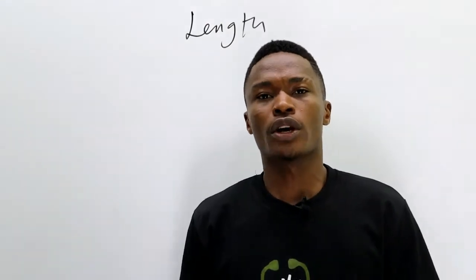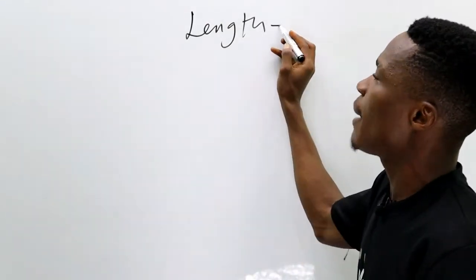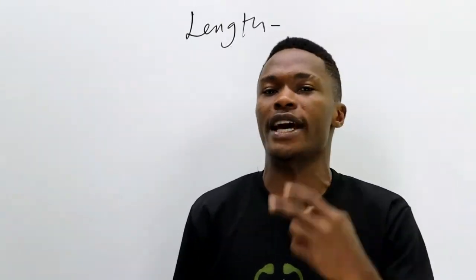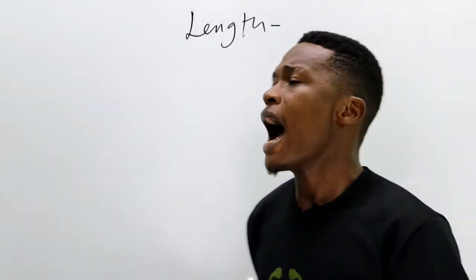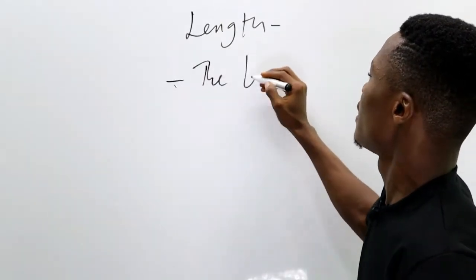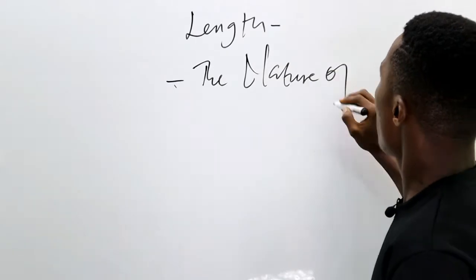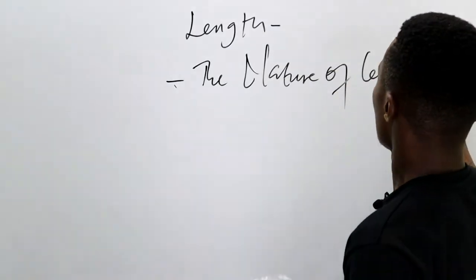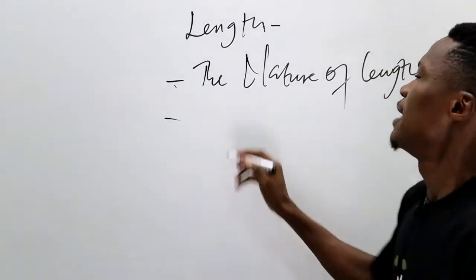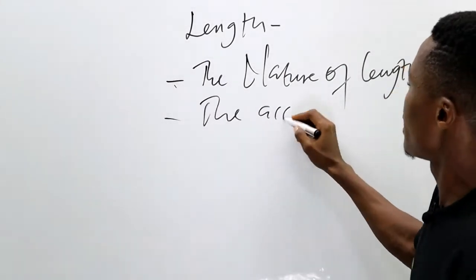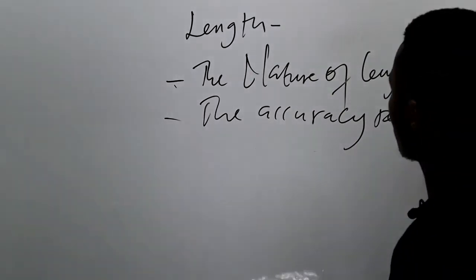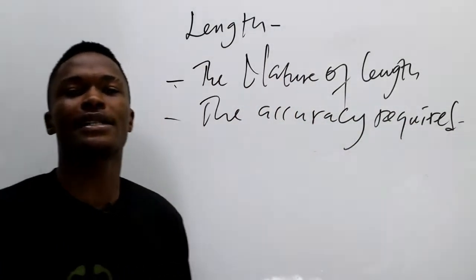Anytime we talk about length, the instrument to use for measuring it depends on two things: number one is the nature of the length to be measured, and the second one is the accuracy required. These are the two things that tell you the kind of instrument to use to measure length.